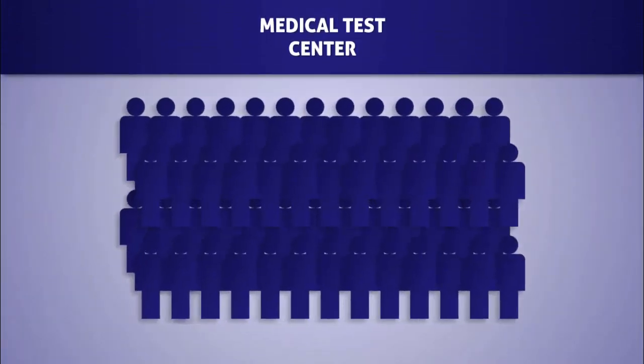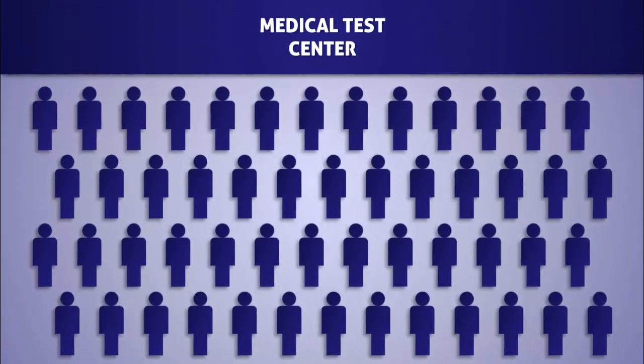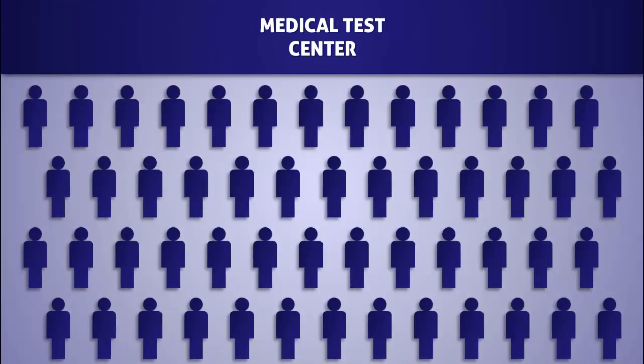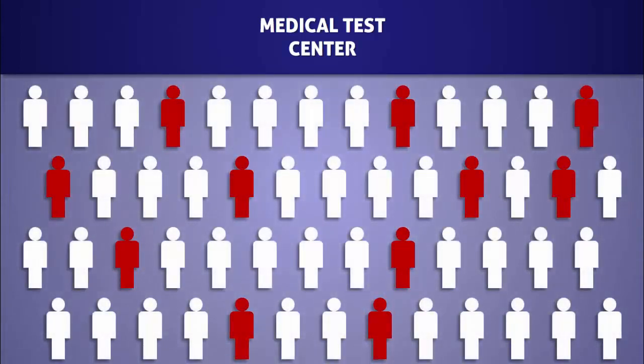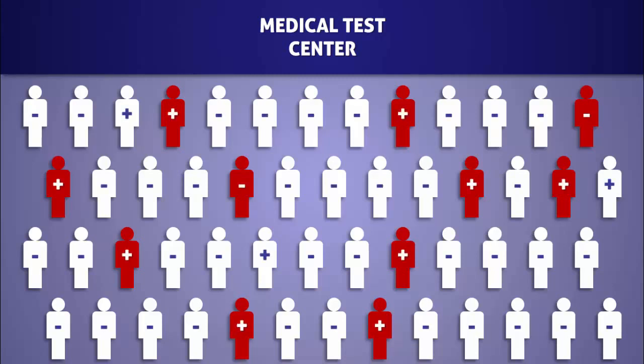In order to help us calculate markedness, we are going to imagine that a group of people are being tested for a condition. The red character icons represent those who have the condition and the white icons represent those who don't. The character icons with a plus sign represent those who tested positive for the condition, and the character icons with a minus sign represent those who tested negative.